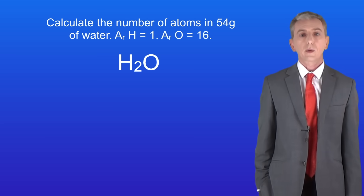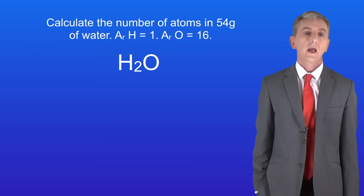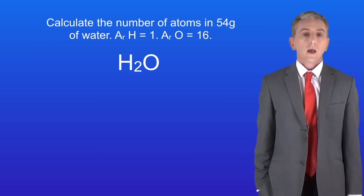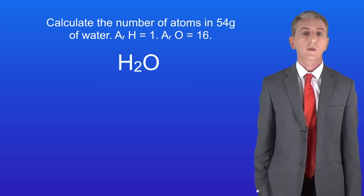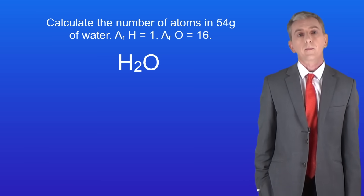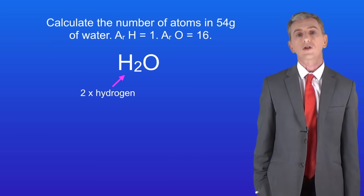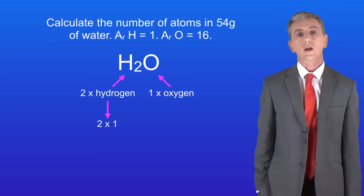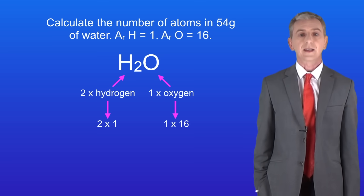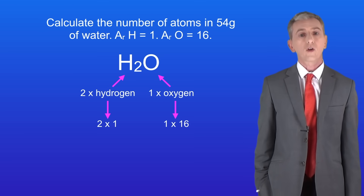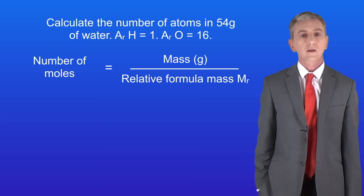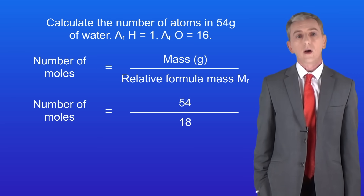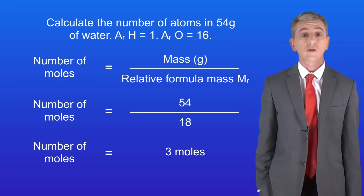Here's one for you to try: calculate the number of atoms in 54 grams of water, and water has the formula H2O. Pause the video and try this yourself. Okay, so first we need to calculate the number of moles of water molecules, and to do that we need the relative formula mass for water. Water contains two atoms of hydrogen — relative atomic mass of 1 — and one atom of oxygen — relative atomic mass of 16. Adding these together gives a relative formula mass of 18. Dividing 54 by 18 means we've got three moles of water.